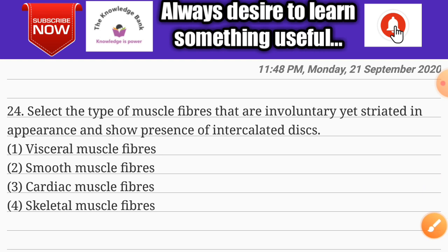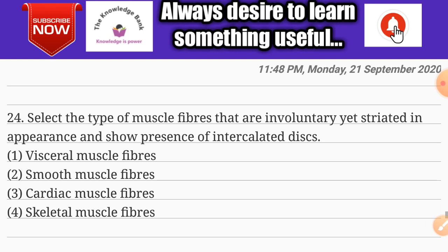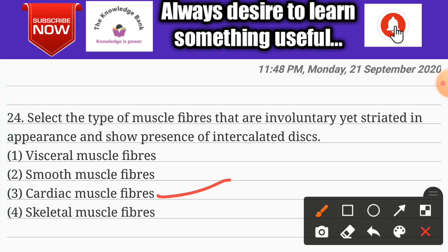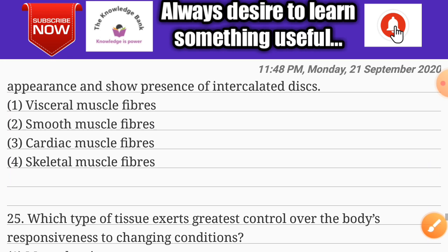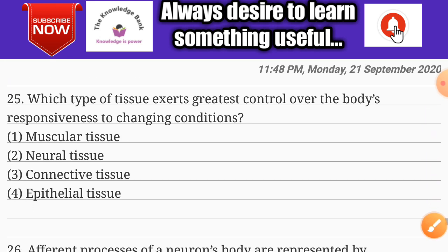Question number twenty-four: select the type of muscle fibers that are involuntary, striated in appearance, and show presence of intercalated discs. Options are visceral muscle fiber, smooth muscle fiber, cardiac muscle fiber, and skeletal muscle fiber. The correct answer is option three: cardiac muscle fiber.